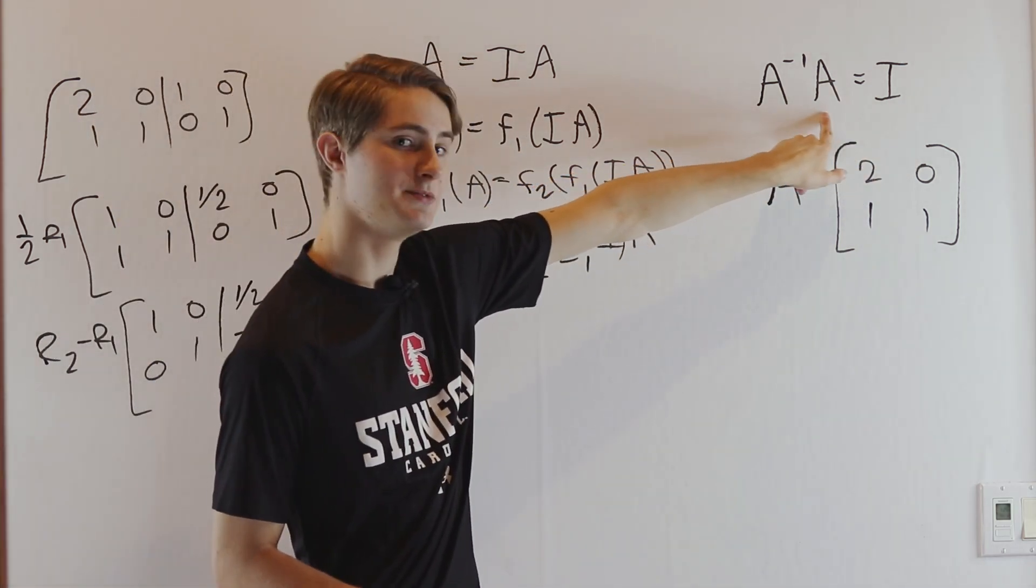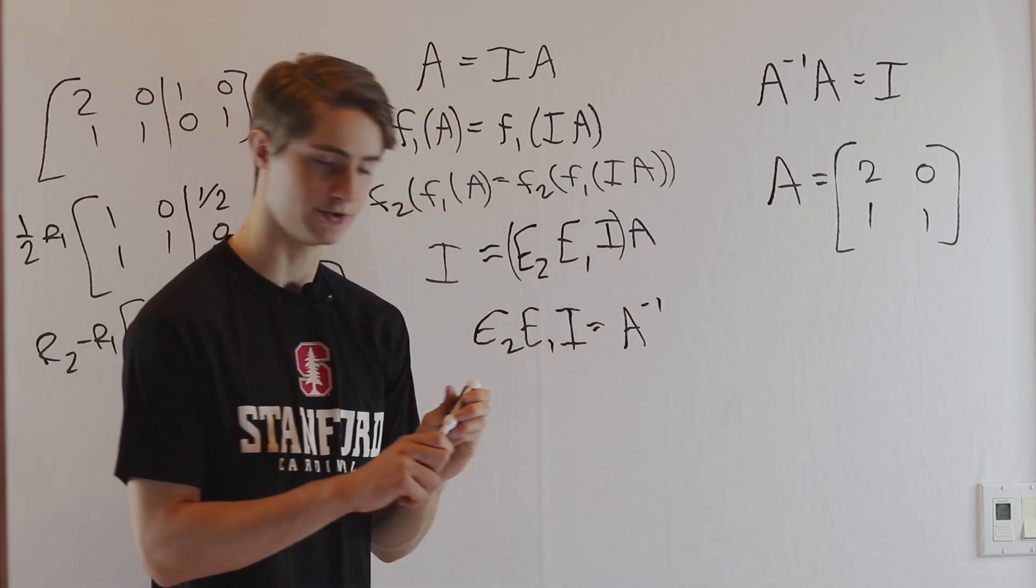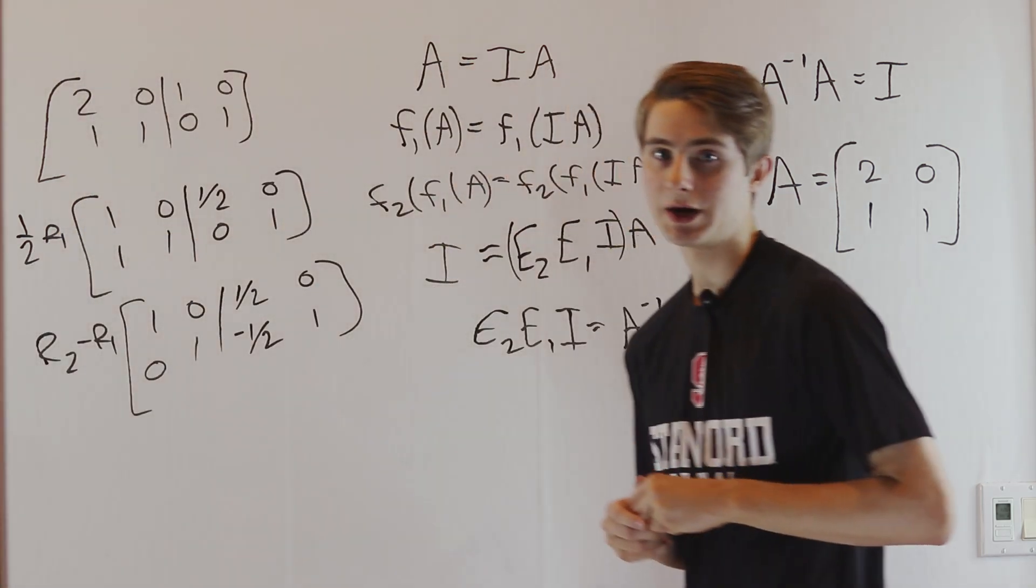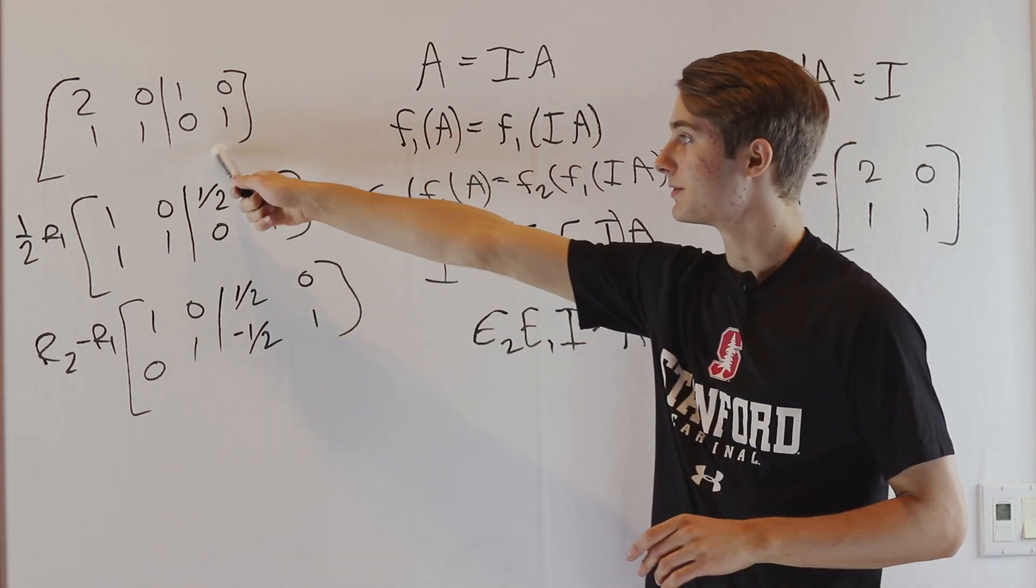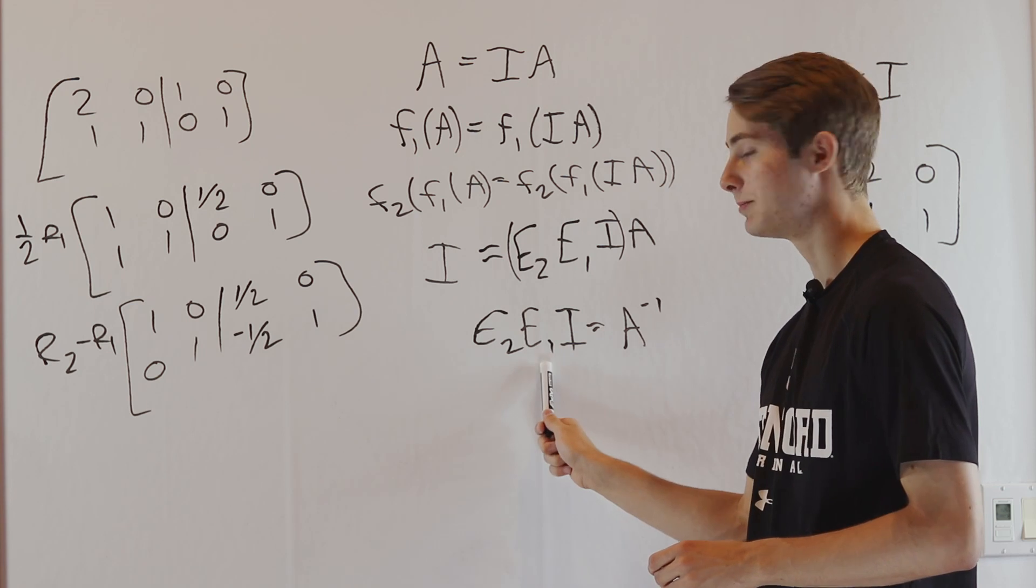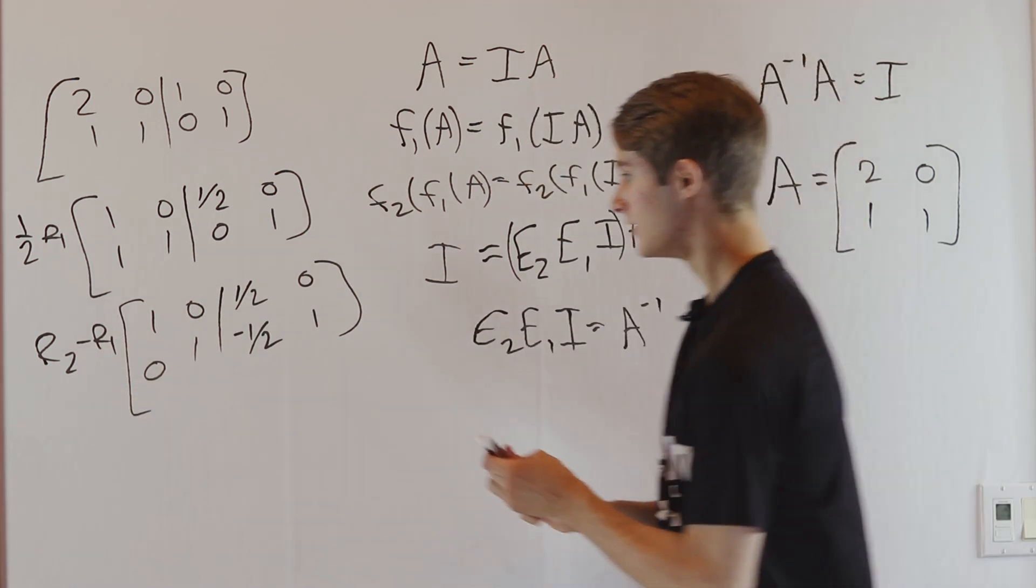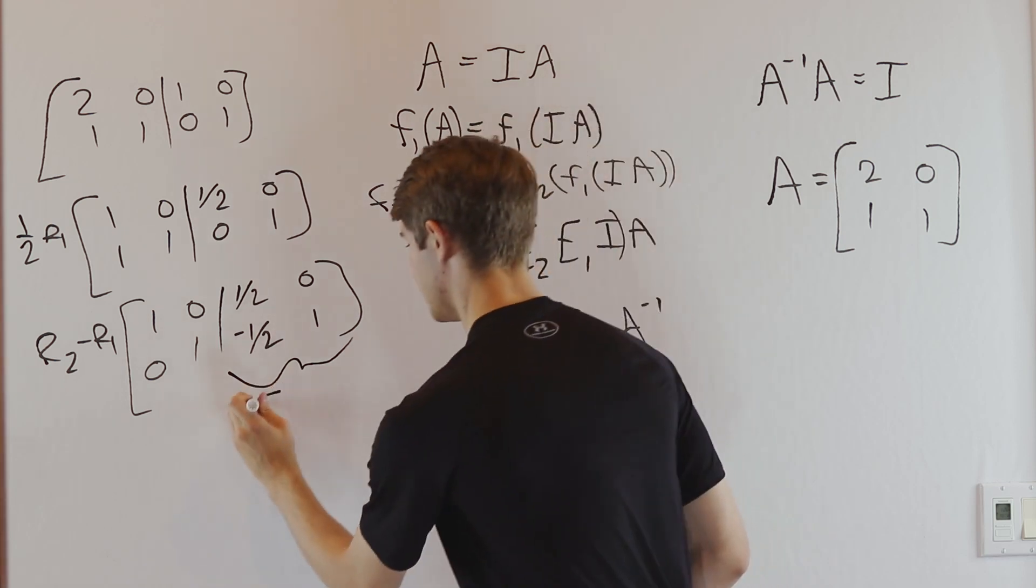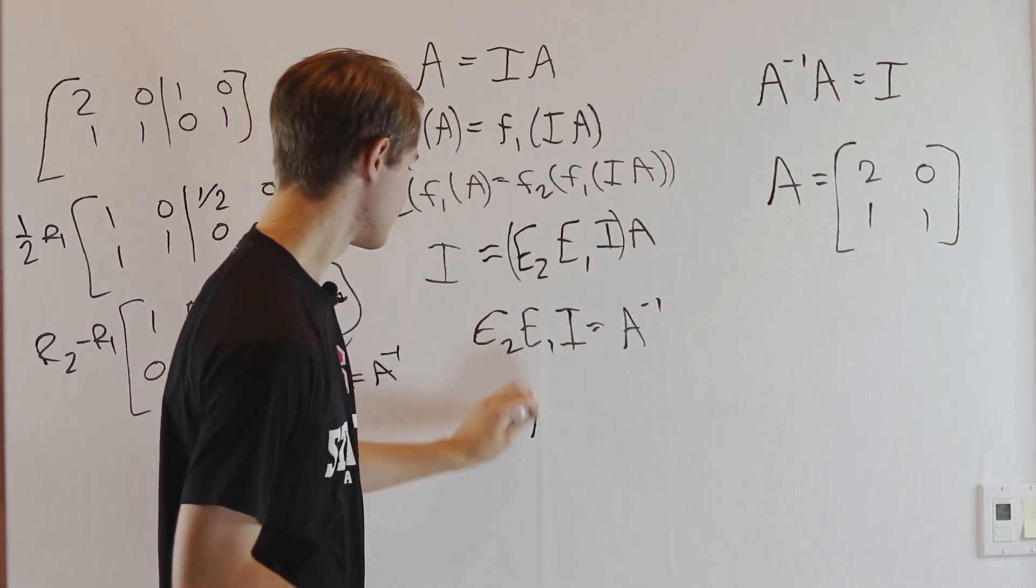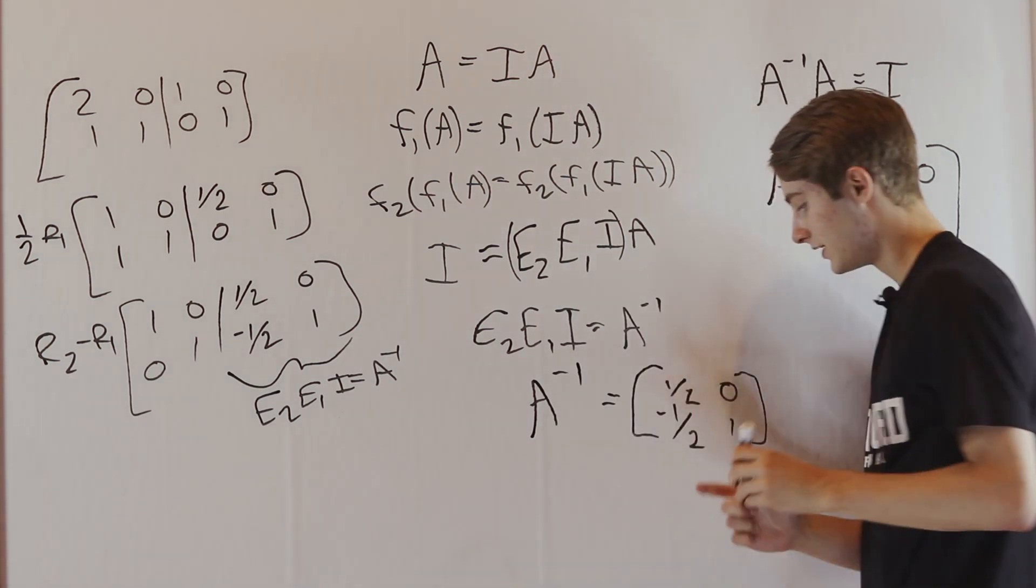The identity matrix equals some matrix times A. E₂E₁I, this product of matrices, is exactly A⁻¹. To find the inverse matrix for A, we just figure out what this product is. That's why we have this super-augmented matrix. We started with I, did (1/2)R₁, then R₂ - R₁. That's the same as taking the identity, applying E₁ (the first row operation), then applying E₂ (the second row operation). The right side of our matrix is E₂E₁I, which is A⁻¹. So A⁻¹ = [1/2, 0; -1/2, 1]. This is our inverse matrix.